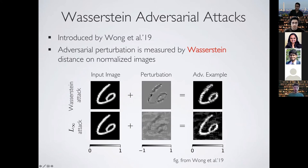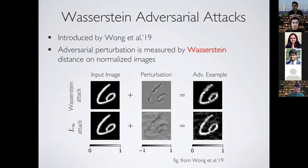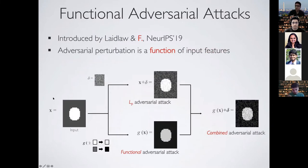With the Wasserstein threat model, you can have spatial perturbations like shifts or rotations that produce a very large LP distance but a very small perturbation from a Wasserstein point of view. Measuring these types of perturbations in LP gives a really large LP value, even though it is a small perturbation under the Wasserstein metric.